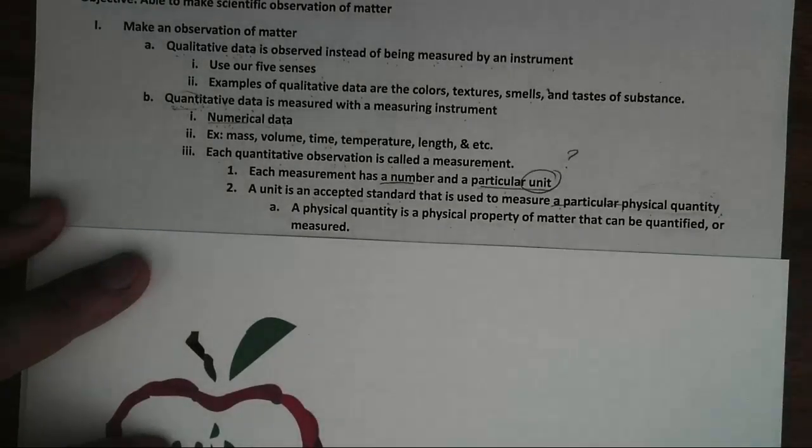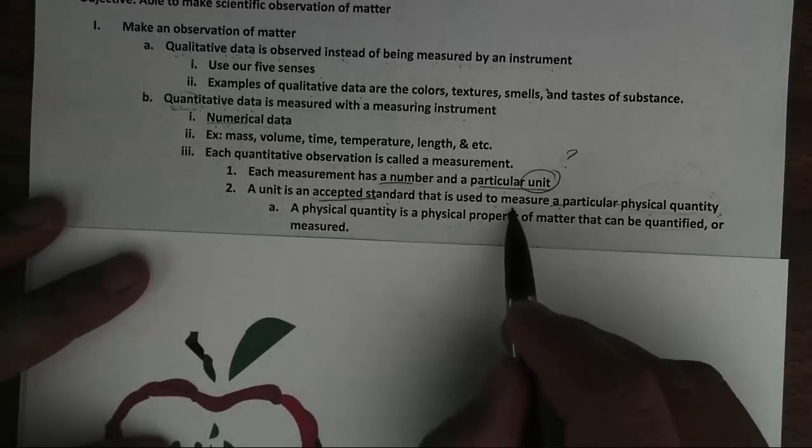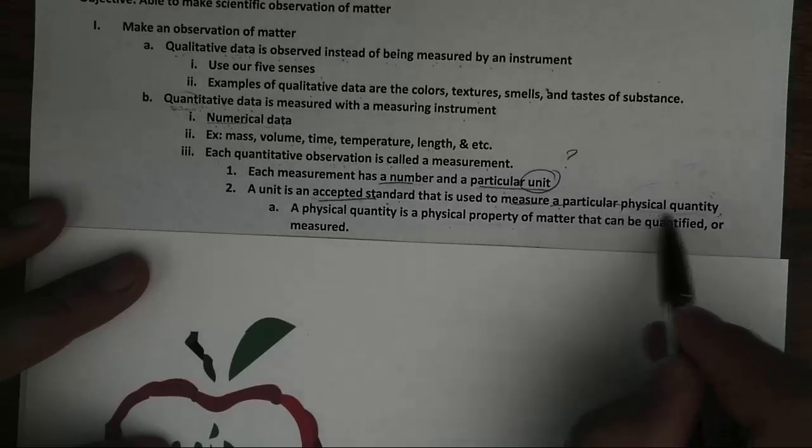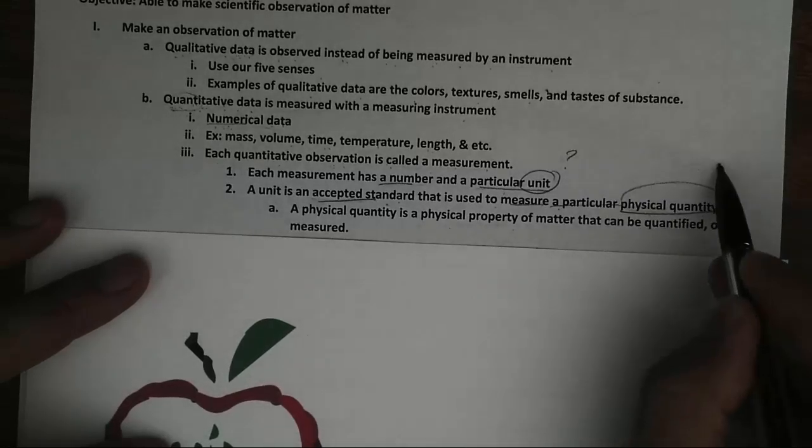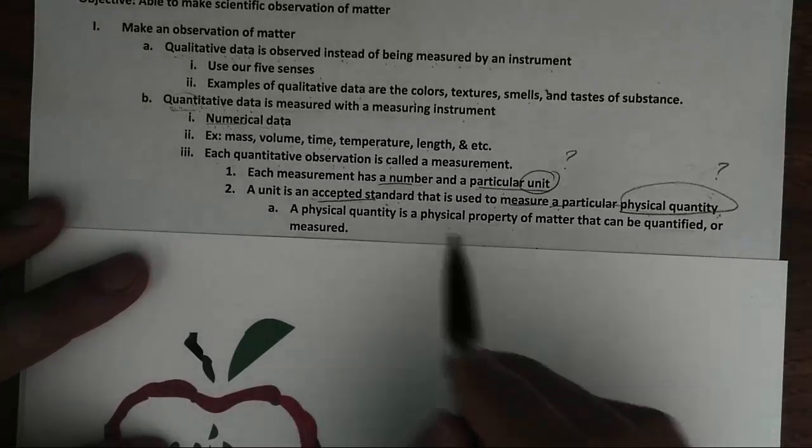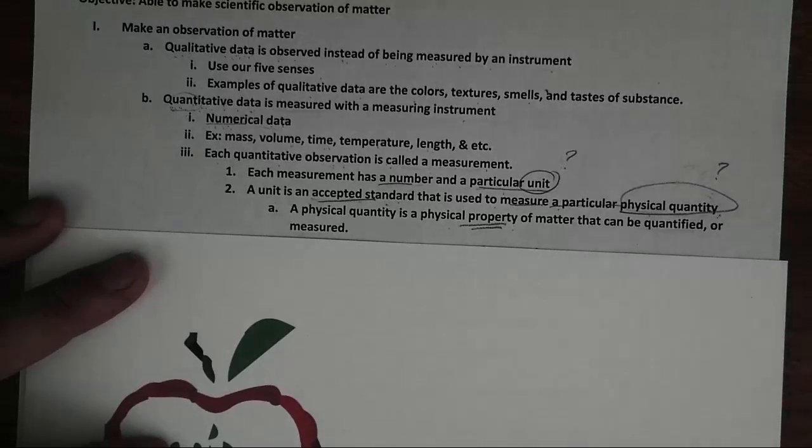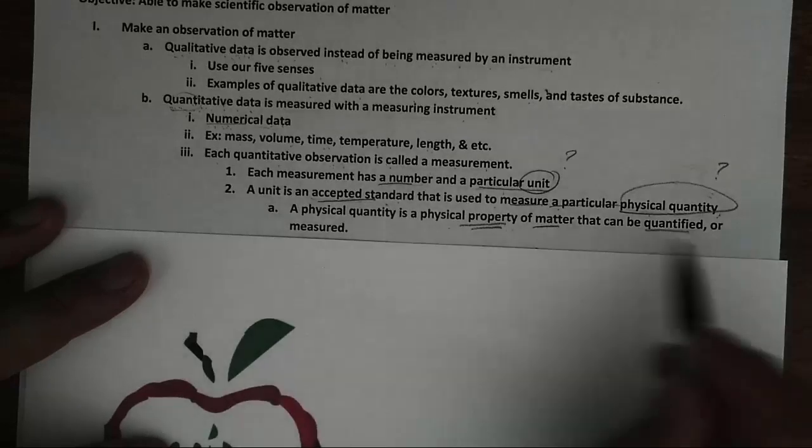What is a unit? A unit is an accepted standard that is used to measure a particular physical quantity. And what is physical quantity? A physical quantity is a physical property. And substances have properties that can be quantified or measured.